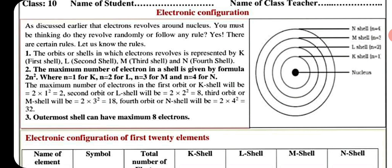The orbit or shells in which electrons revolve is represented by K, first shell, L, second shell, M, third shell, N, fourth shell.